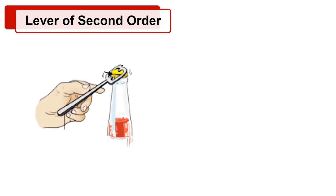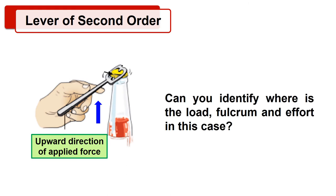Now let's see the second type of lever, which is lever of second order. Sometimes we use an opener to remove the cap of the sauce bottle. To remove the cap, the opener is rested on the cap of the sauce bottle as shown in the figure, and we apply a force on the opposite end of the opener to pull it upwards. Then the cap is pulled up as the opener rotates. Can you identify where is the load, fulcrum, and the effort in this case?